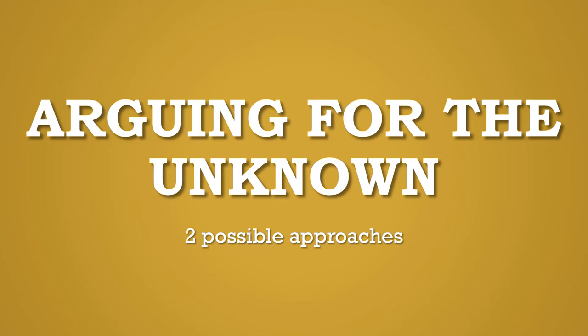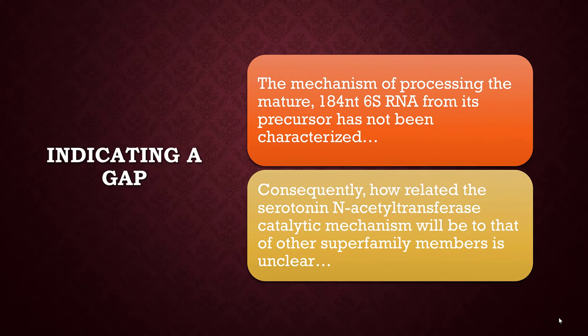There are basically two ways to approach this move. The first approach to arguing for your unknown is simply to state what the unknown is in light of all the knowledge claims you've made up to this point in the literature review.